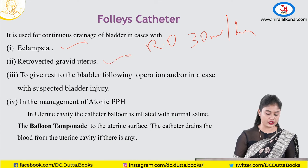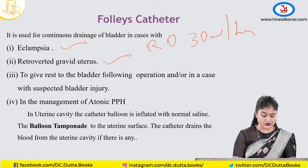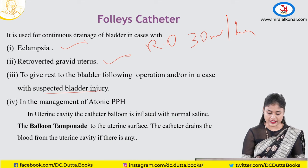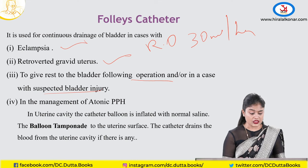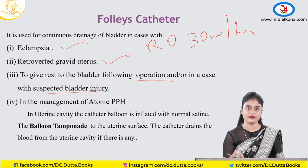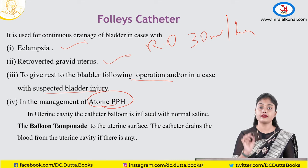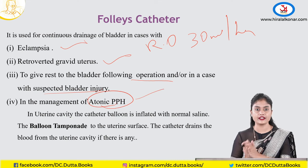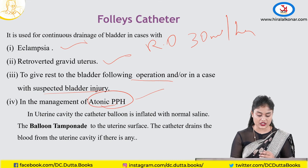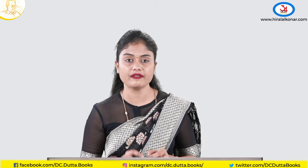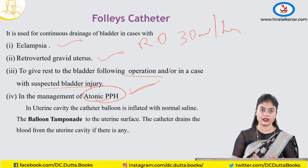Foley's catheter is also used to give rest to the bladder following an operation or suspected bladder injury. Preoperatively, it is inserted for caesarean section and abdominal hysterectomies. In atonic PPH, catheterizing the bladder helps the uterus contract — if the bladder is well distended, uterine atonicity is more. So draining the bladder is one of the first management steps in PPH, alongside inserting two large-bore IV cannulas.